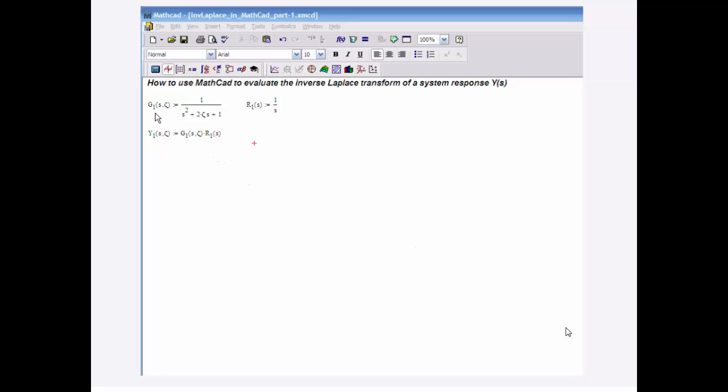So I have this system G1 of S. It's a second-order system. It has a resonant frequency of square root of 1, and it has a damping ratio of zeta, which I'm interested in exploring how the system responds for different damping ratios. So I've added it here as a parameter, an argument in my function call. But it's optional.